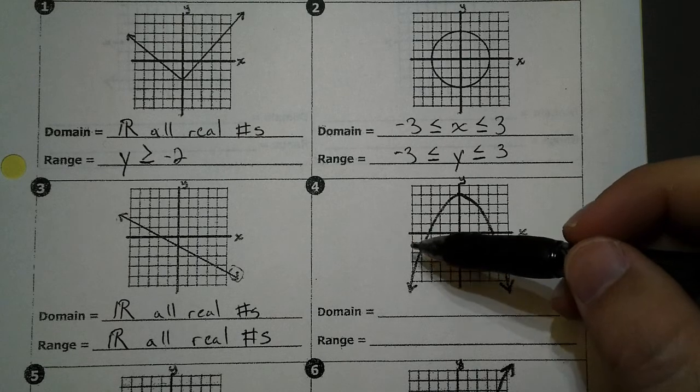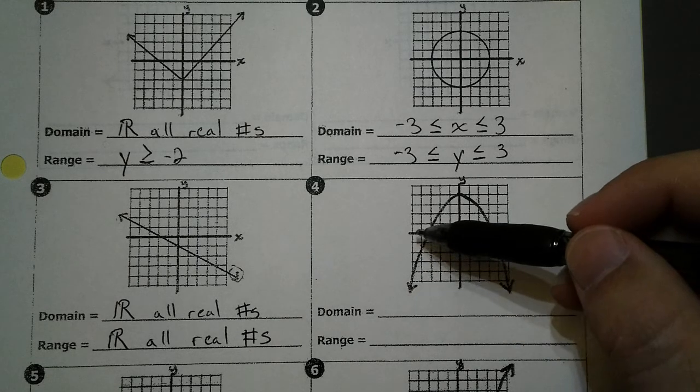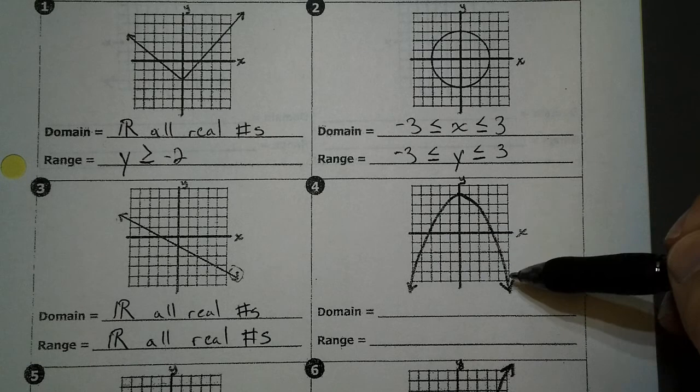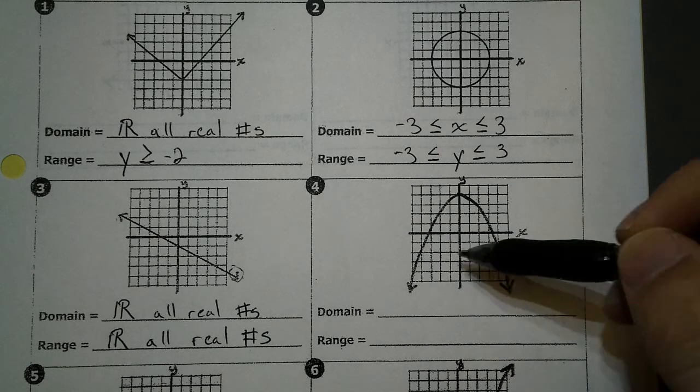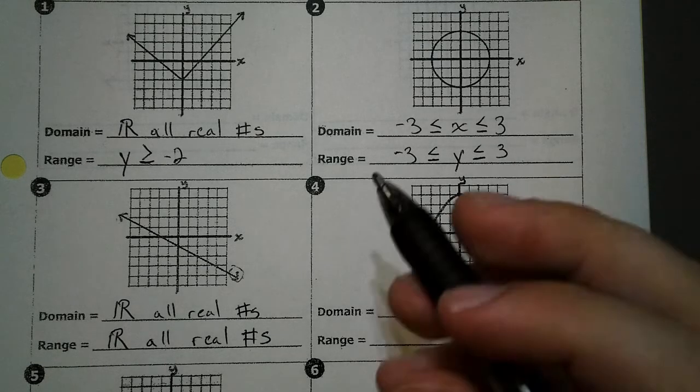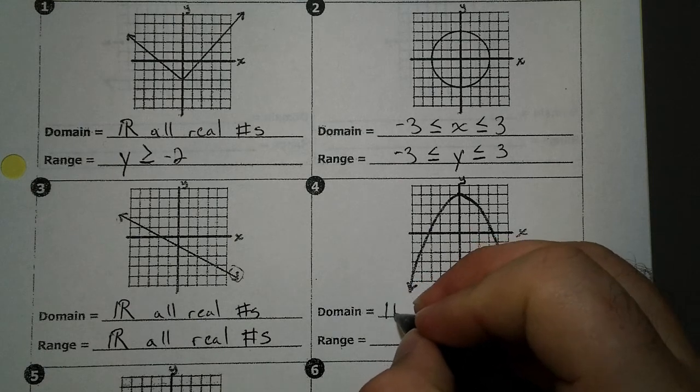So scanning on the left, boom, this arrow keeps going. Scan all the way to the right, boom, this arrow keeps going. Left and right, if they continue, that domain is going to be all real numbers.